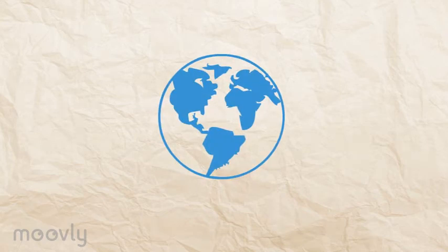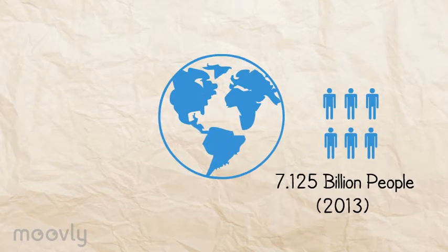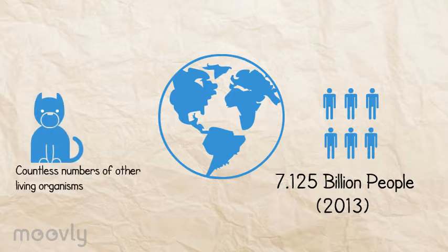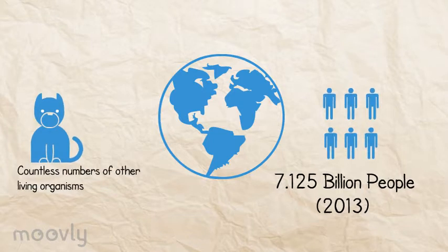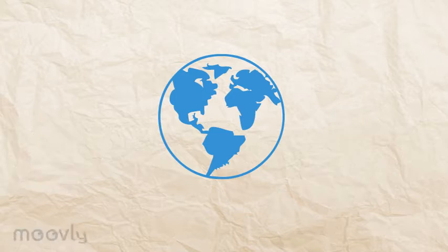This is our Earth. It is home to 7.125 billion people and countless numbers of other living organisms. Even though it's the only planet for us to live in, we ourselves are destroying it.